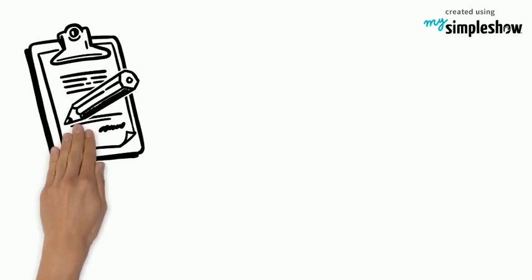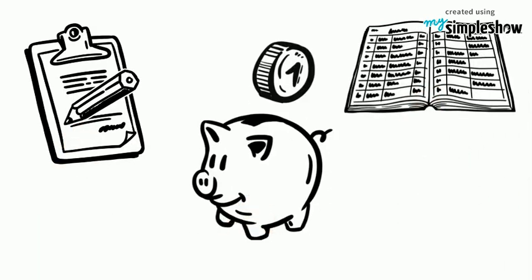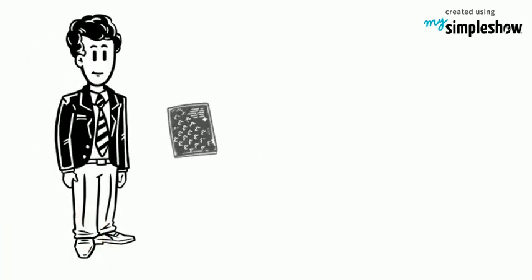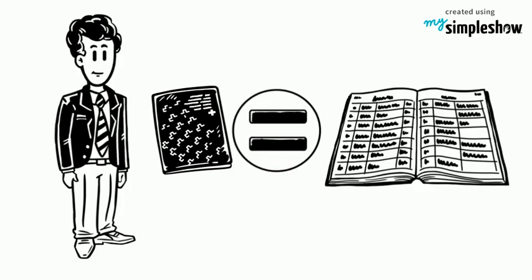He also maintains a cash book to record all the bank transactions. Sam's passbook balance and cash book balance should be equal but sometimes it is unequal. Let's see an example to understand the cause behind this difference.